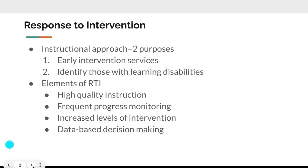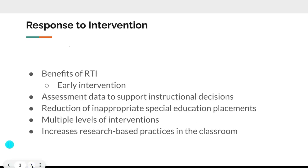There are four elements of RTI. First, high quality instruction for all students. Second, frequent progress monitoring of how students are progressing. Third, increasing levels of intervention if instructional strategies aren't working. Fourth, data-based decision making for our choices.